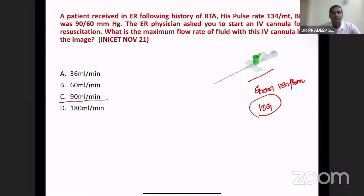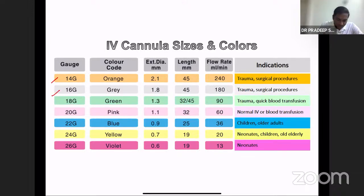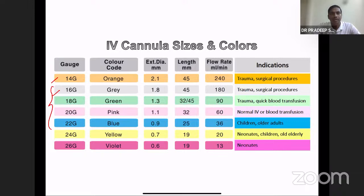Let's quickly revise the cannula color codes. The color code starts from 14: 14 is orange, 16 is gray. The commonly used gauges in routine day-to-day practice are 16, 18, 20, and 22. 16 is gray, 18 is green, 20 is pink — commonly used for fluid transfusion — and 22 is blue, commonly used for adolescents. 24 is seen in pediatric wards.